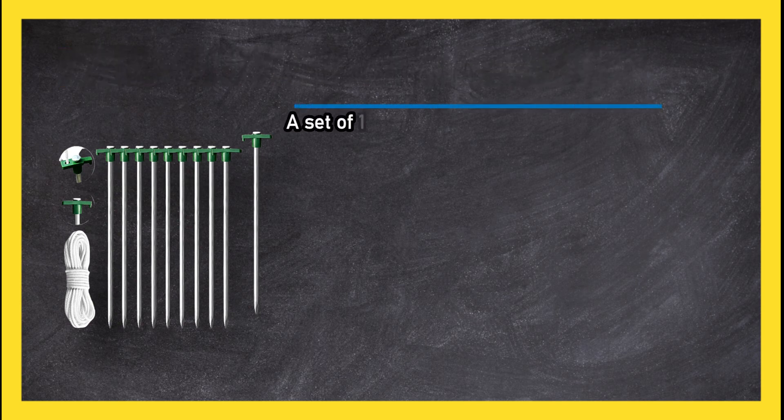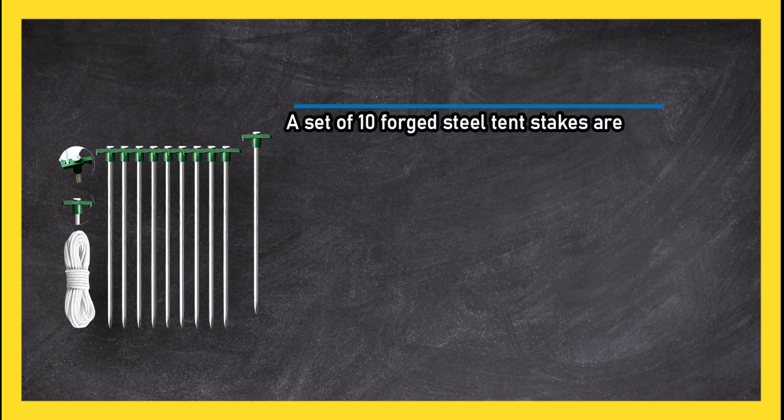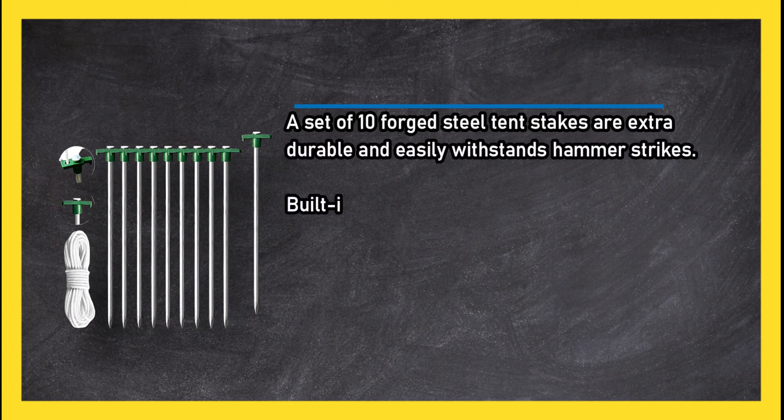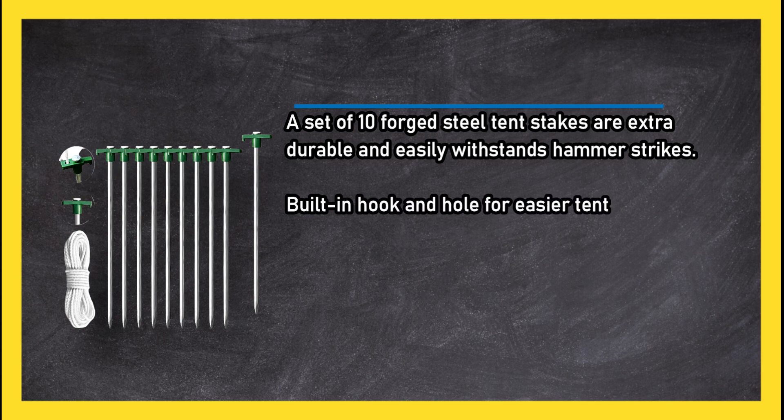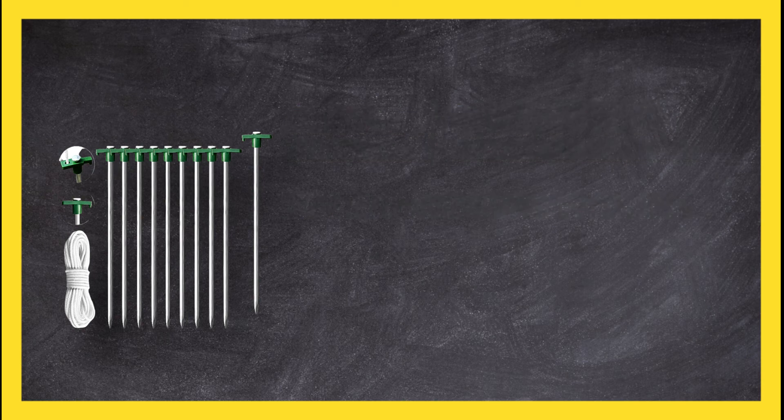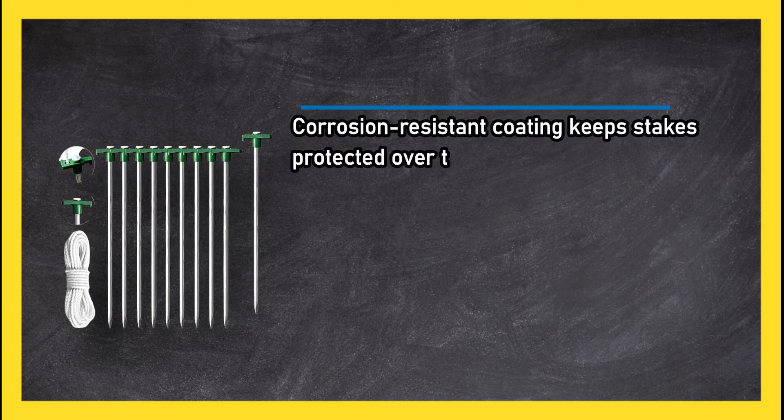A set of 10 forged steel tent stakes are extra durable and easily withstands hammer strikes. Built-in hook and hole for easier tent pitching. Corrosion resistant coating keeps stakes protected over time.